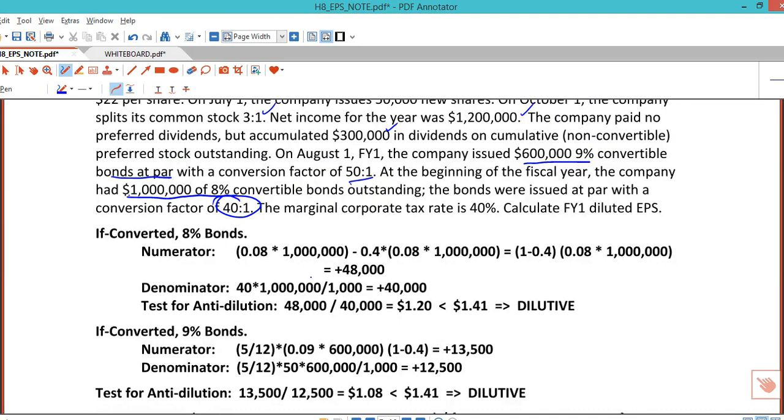We have an eight percent and a nine percent bond. The eight percent was outstanding all year, so I didn't need to do the month thing, but it's eight percent times the par value. And so we're just calculating the numerator right here. This is the interest avoided.